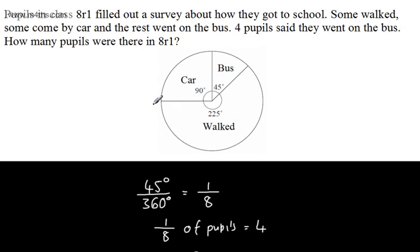So the first example was drawing a pie chart, and the second and third were interpreting. As you saw, there are lots of different ways you can find these answers.